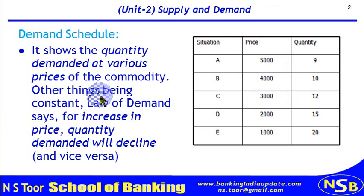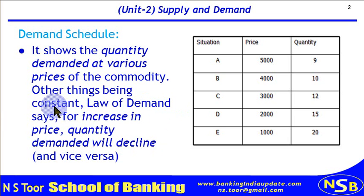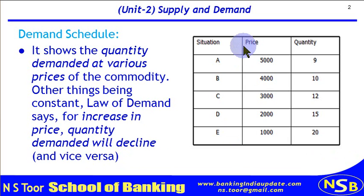Other things remaining constant, the law of demand says that for an increase in price, quantity demanded will decline. According to the law of demand, if other things are assumed to be constant, then if there is an increase in price, the quantity demanded will decrease, and vice versa.